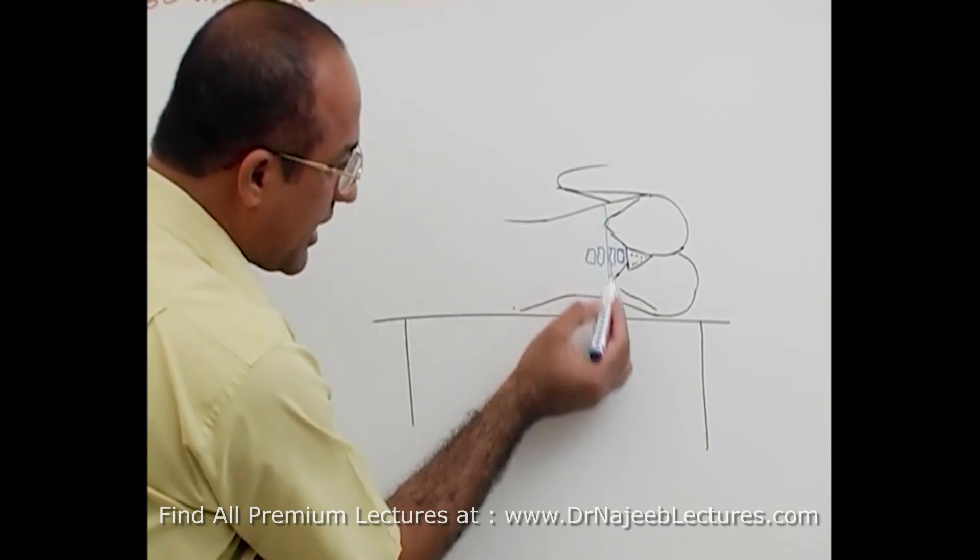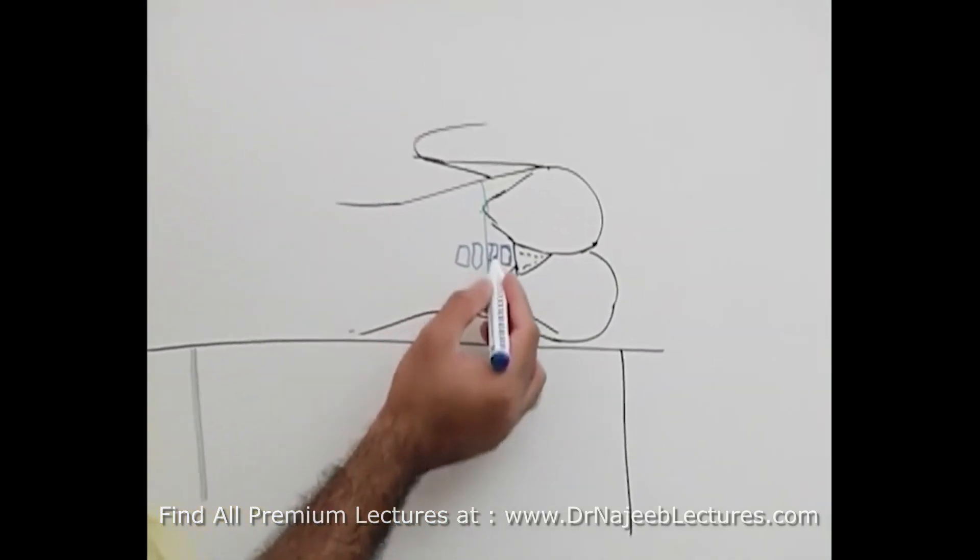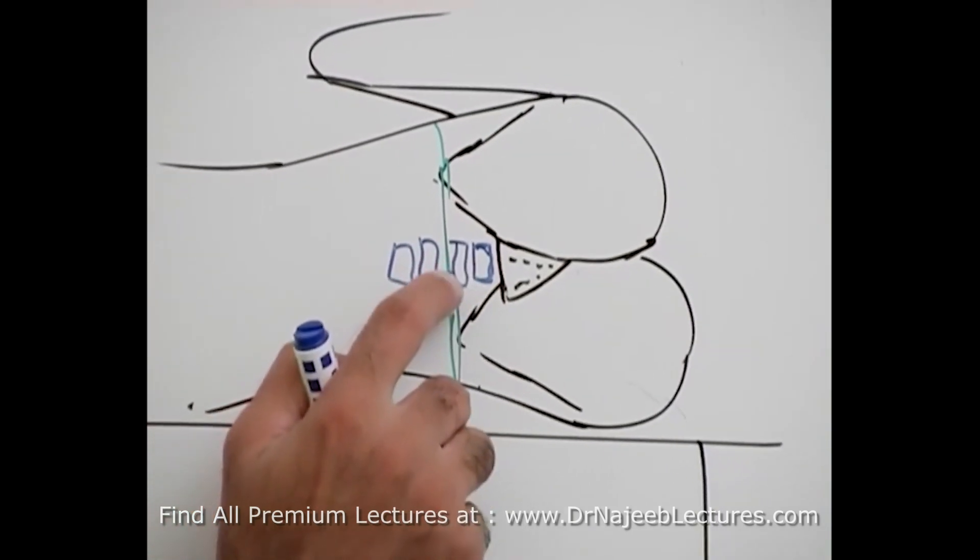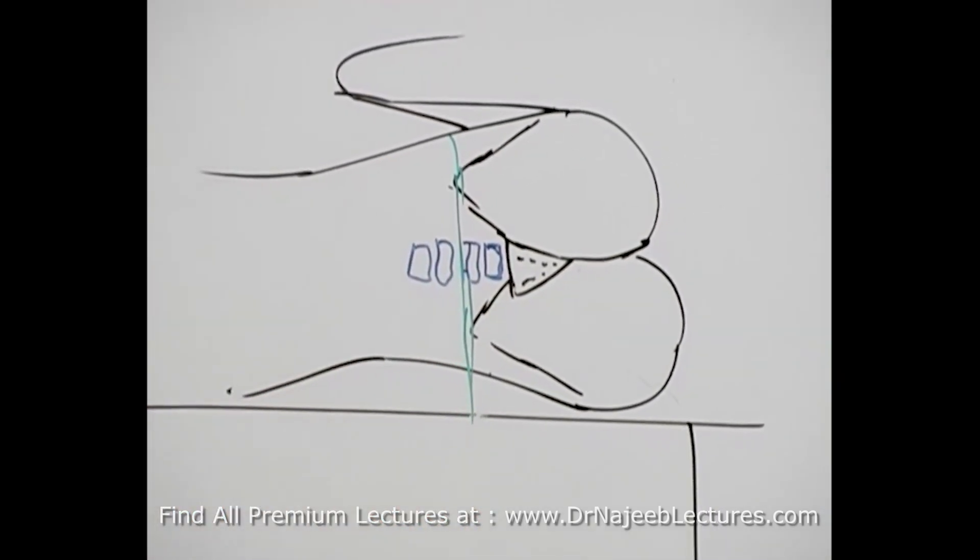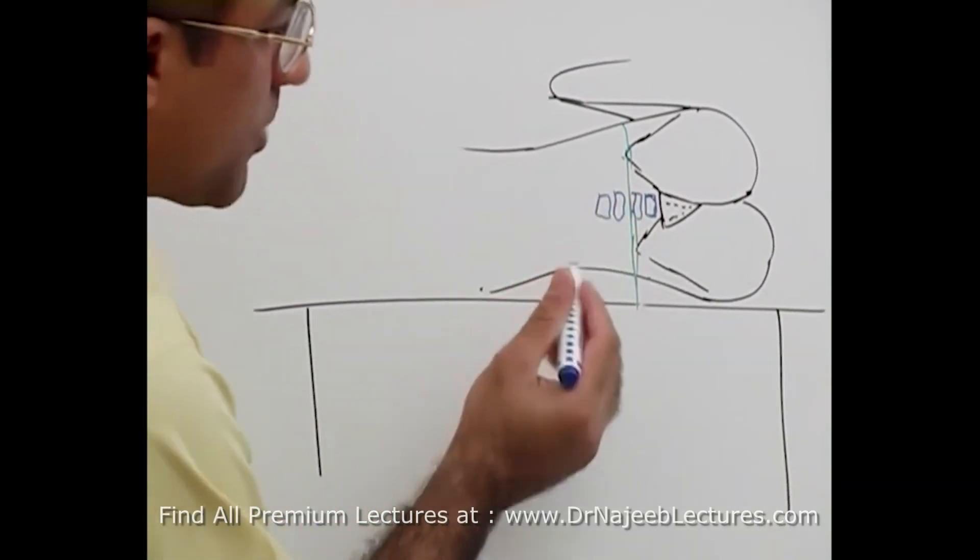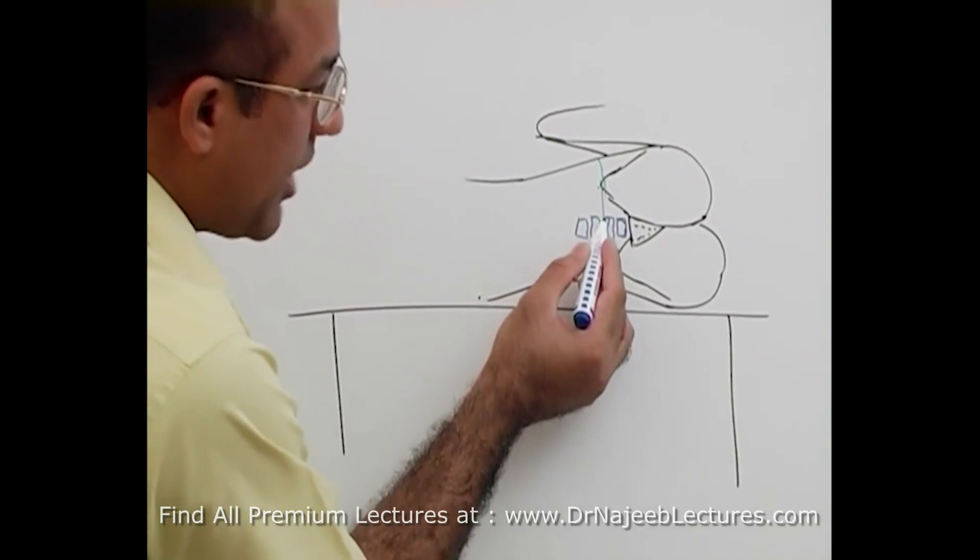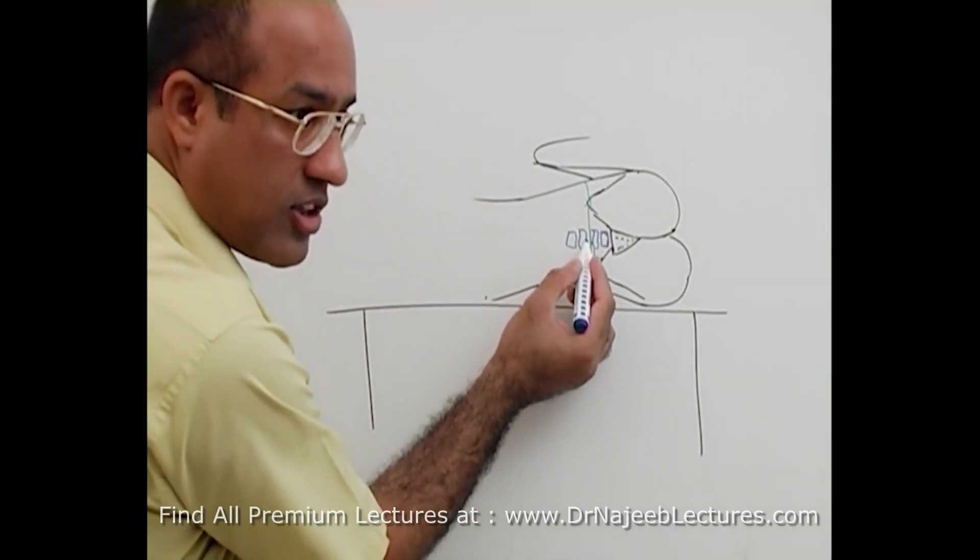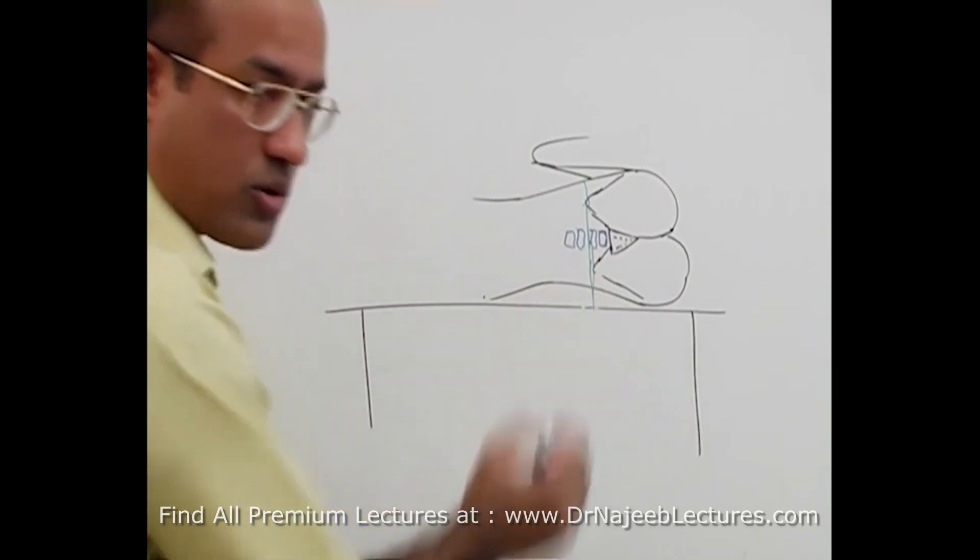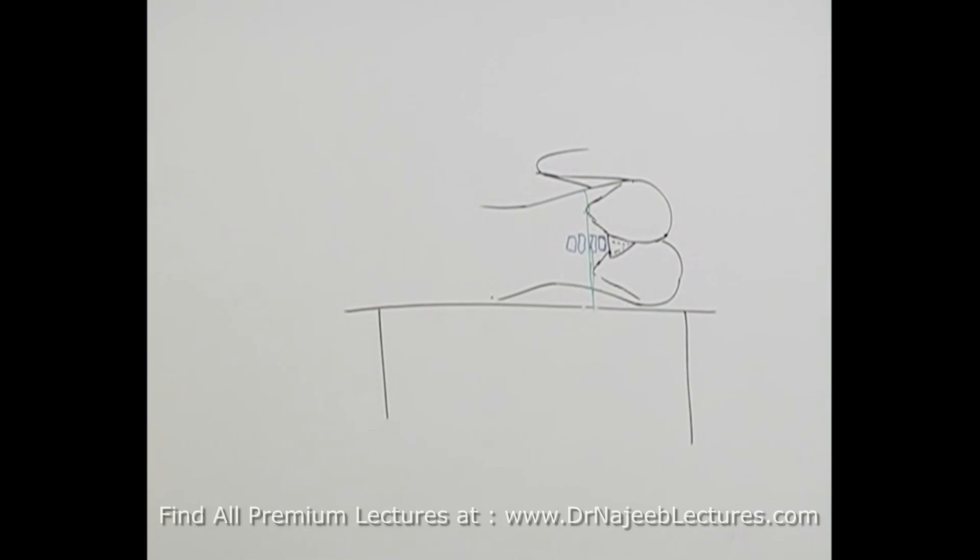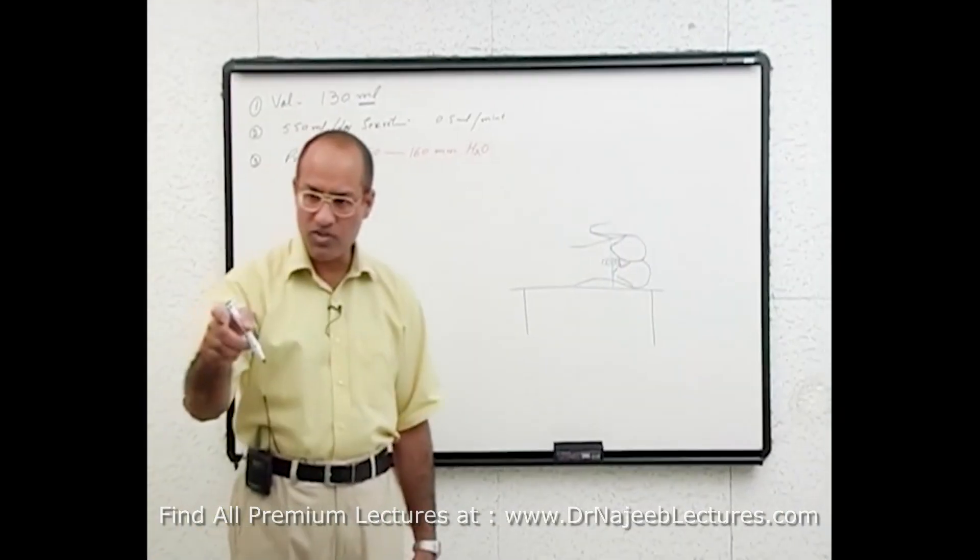The line which joins the iliac crest, that is at L4. With the finger you palpate the interspinous area. Because every vertebra has spine. So you have to find a interspinous area. And if L4 is just under it, either you will puncture above, cephalic to the L4 or caudal to the L4. L4 means lumbar vertebra fourth. Is that clear, Murtaza?